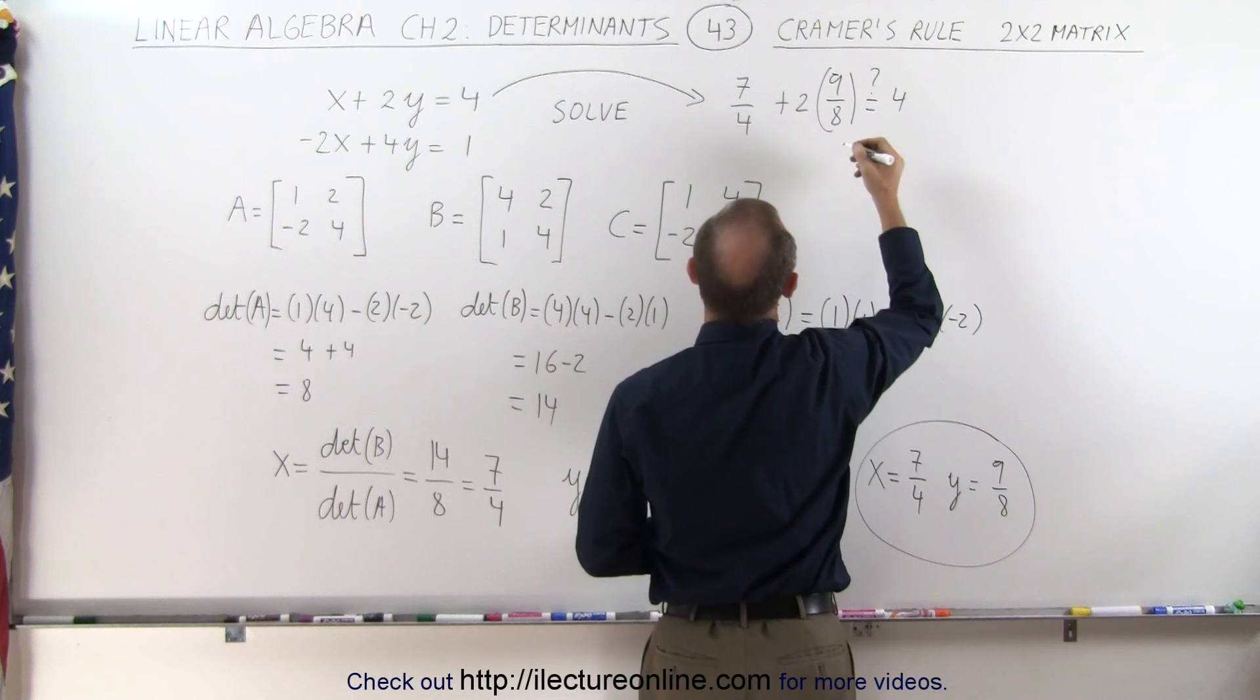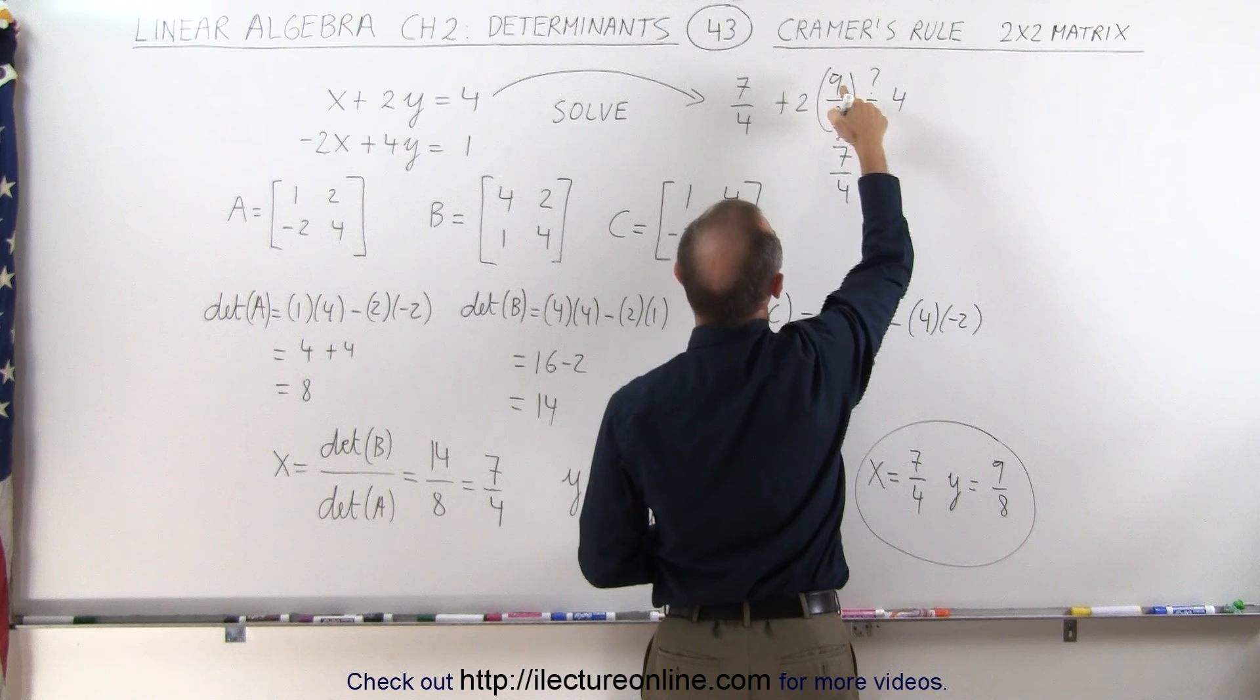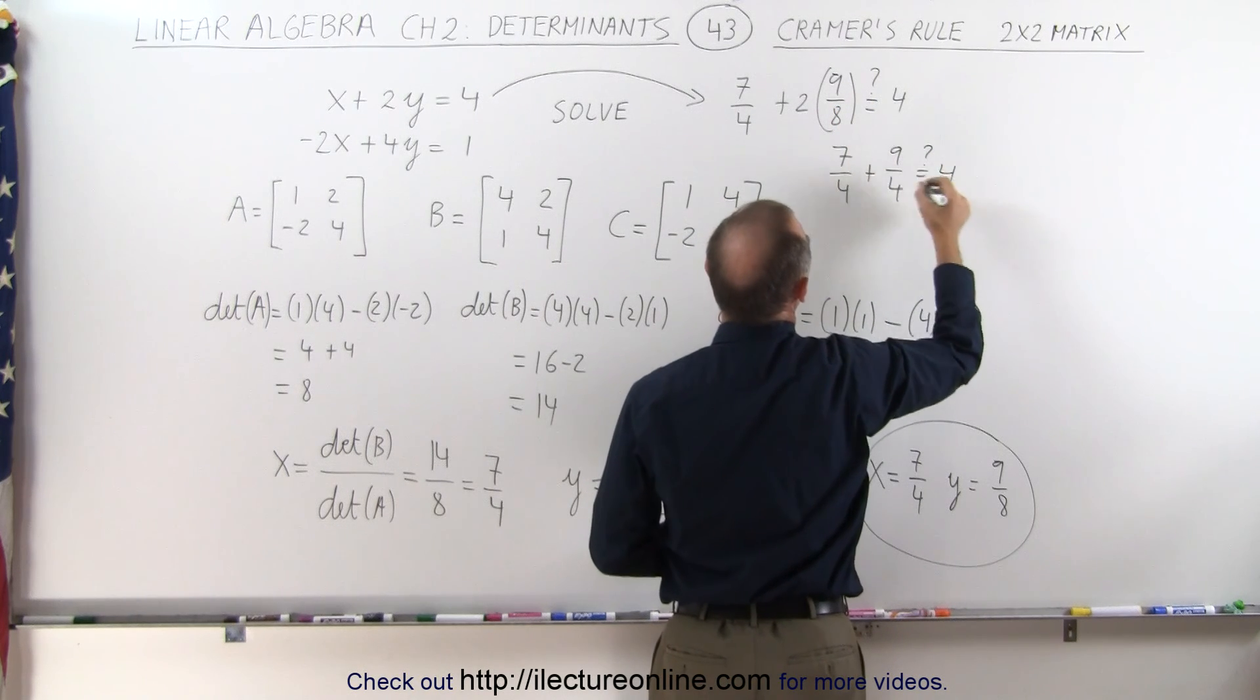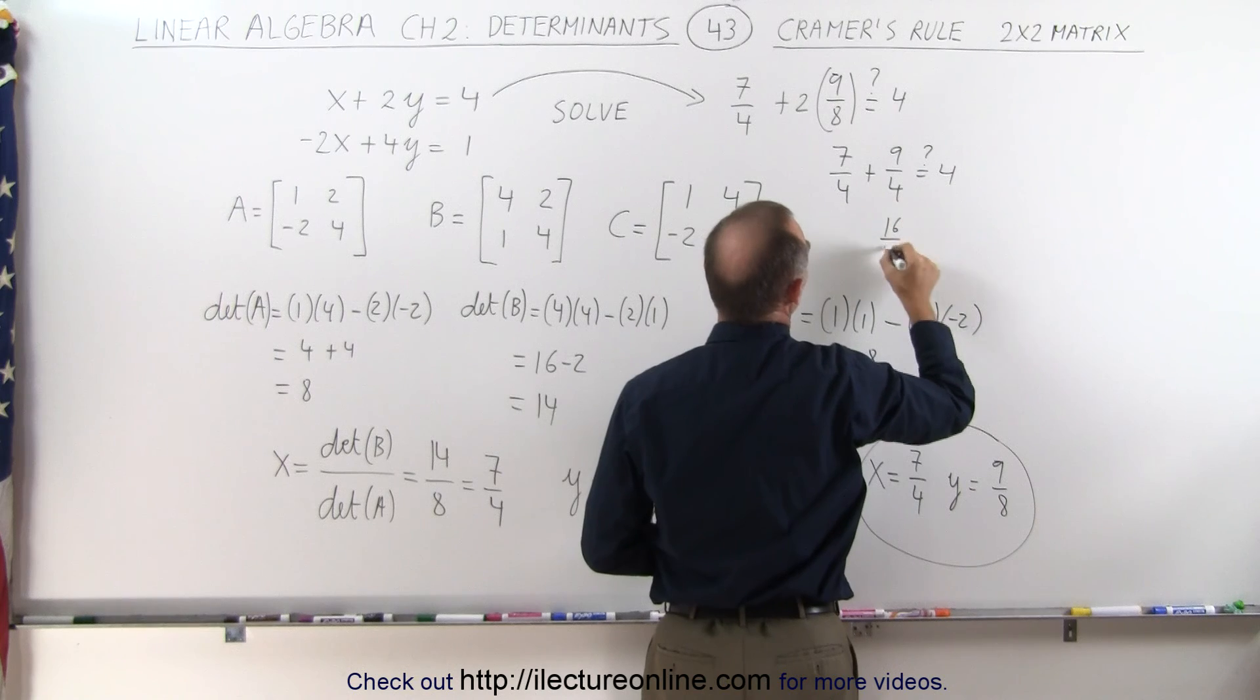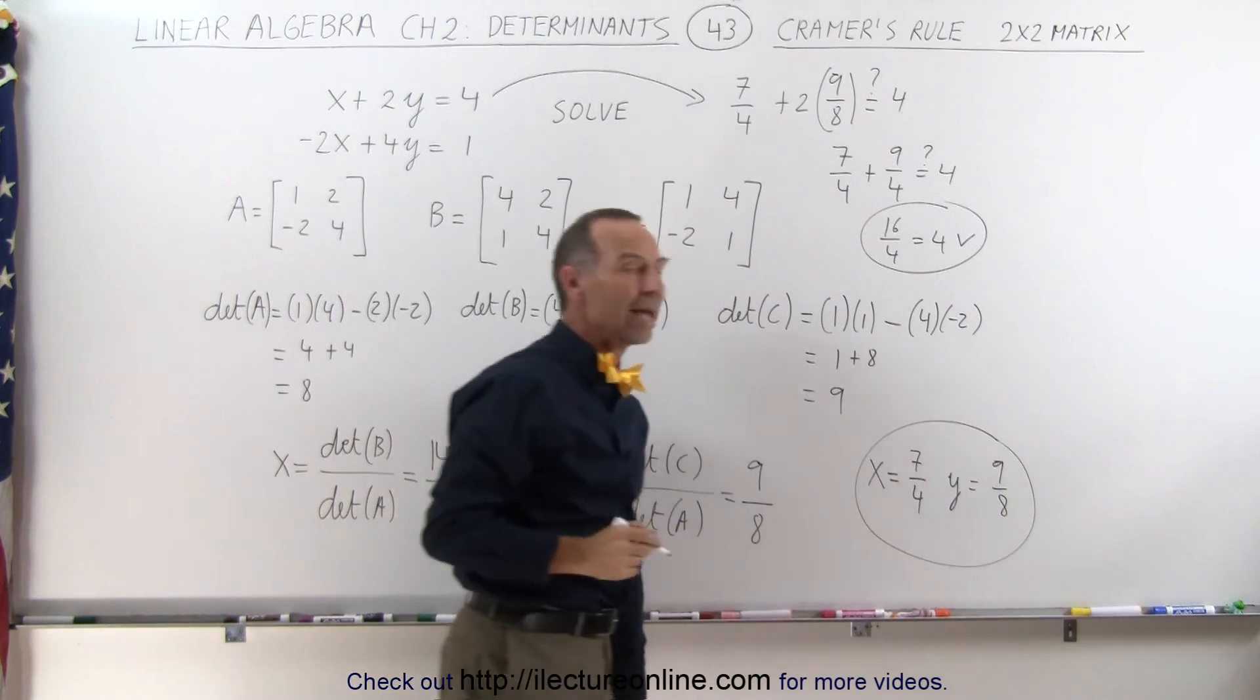So we can simplify that a little bit. We have 7 over 4 plus 2 and 8, simplify, that becomes 9 over 4. Is that indeed equal to 4? And sure enough we have 16 over 4 is 4, and therefore we know that we got the correct answers.